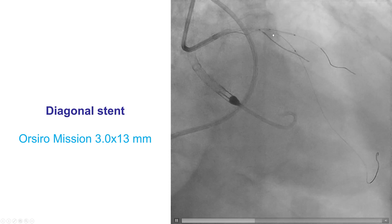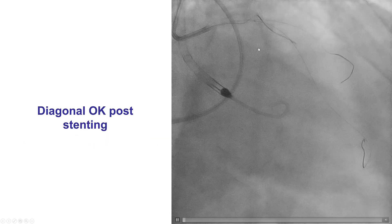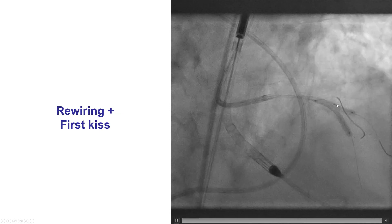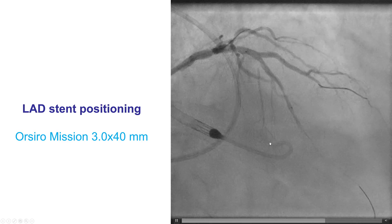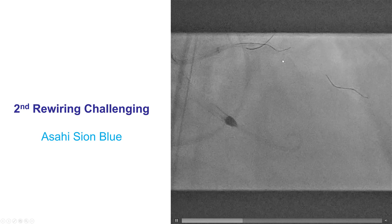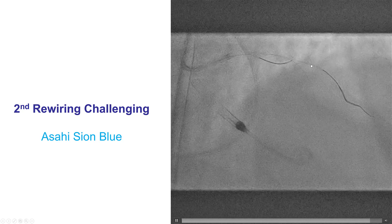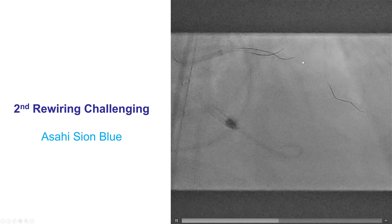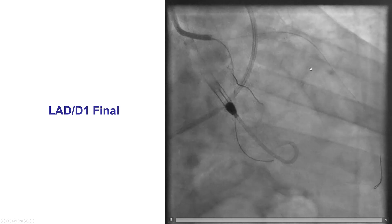After predilatation, we started by positioning a stent into the diagonal branch protruding into the LAD — a 3.0 by 13 mm stent — which was deployed. We ensured a good result, then crushed with the balloon placed into the LAD. We rewired and performed the first kissing balloon inflation, followed by placing a 3.0 by 40 mm stent into the LAD covering the mid and more proximal lesion. We had difficulty rewiring the diagonal after LAD stent placement, but a workhorse BMW Blue wire eventually successfully crossed into the diagonal branch, followed by balloon inflation, the second kissing balloon inflation, and proximal optimization with a nice result in the LAD.